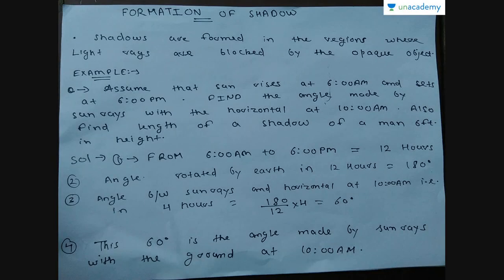Let us now consider the concept of formation of shadows. Shadows are nothing but the regions where light rays are blocked by an opaque object — by opaque, I mean that light rays cannot pass through it. For example: assume that the sun rises at 6 am and sets at 6 pm. Find the angle made by the sun rays with the horizontal at 10 am, and find the length of the shadow of a man 6 feet in height at this time.